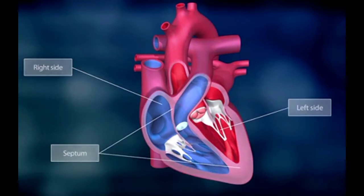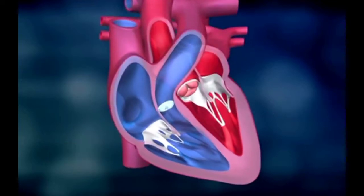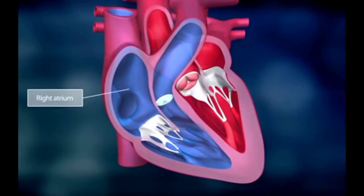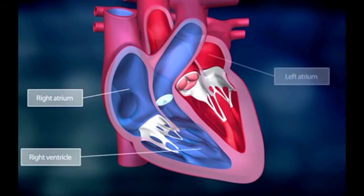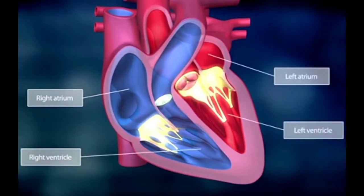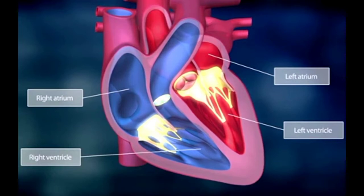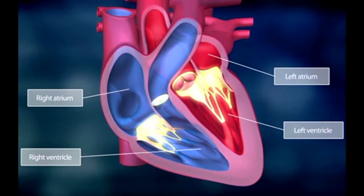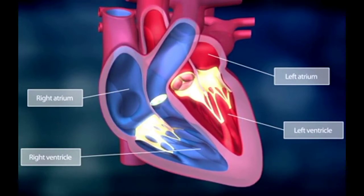The heart has four chambers: the right atrium with the right ventricle, and the left atrium with the left ventricle. Four valves regulate the flow of blood through the heart and its circulation.